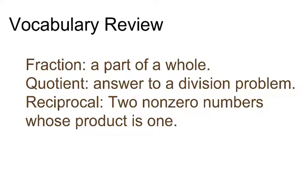Let's review our vocabulary. You don't need to copy this down in your notes if you already have it from the previous tutorial. We know a fraction is written in A over B format and represents part of a whole number. A quotient is the answer to a division problem and the reciprocal, those are two non-zero numbers whose product is 1. For example, the reciprocal of 1 half is 2 over 1.